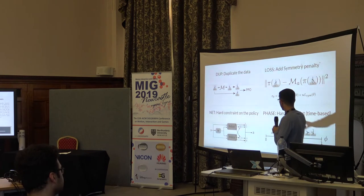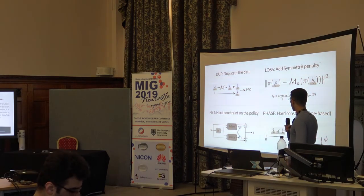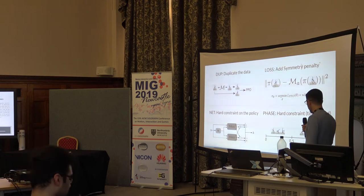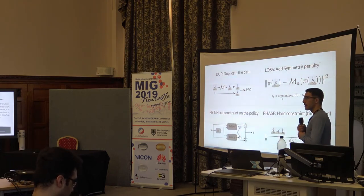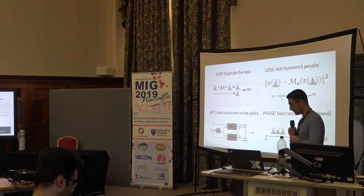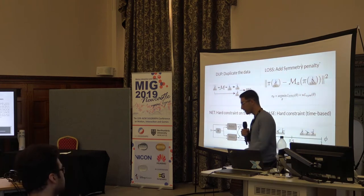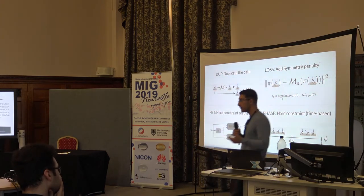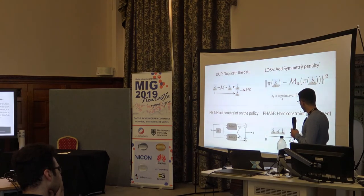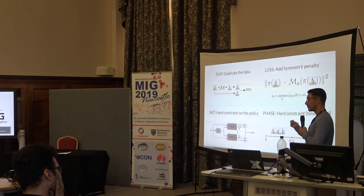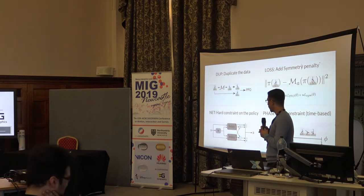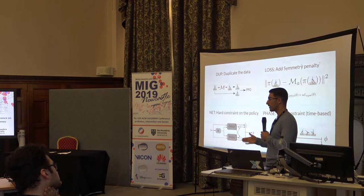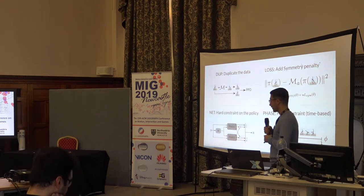The fourth method is what I call phase, and it's a hard constraint that is based on time. The idea is that if you already know that the first half of the gait cycle is walking with your right foot and the next half is walking with your left foot, you can divide that in half. In the first half you don't do anything, but in the second half you completely mirror the states you give to the policy and mirror the actions you get out of it. In practice, the policy only needs to learn one half of the walk cycle, and you just copy that to the other half.